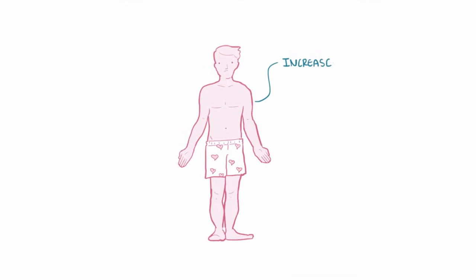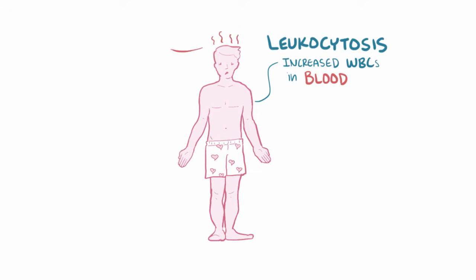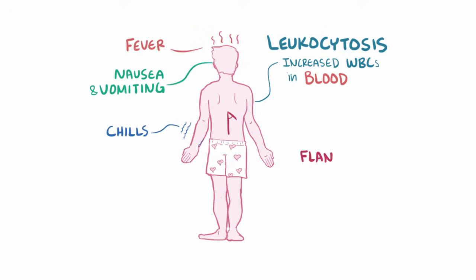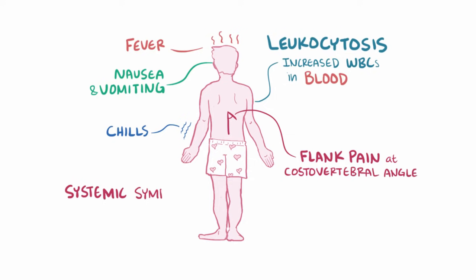Patients can also present with increased white blood cells in their blood, called leukocytosis, and as a result of the inflammatory immune response, patients can also develop fevers, chills, nausea and vomiting, as well as flank pain at the costovertebral angle. These systemic symptoms are what often distinguish acute pyelonephritis from a lower urinary tract infection.